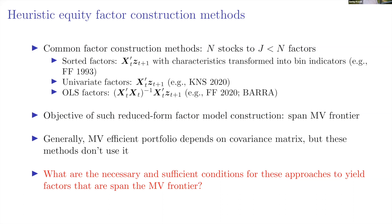The first question is: what are the necessary and sufficient conditions for factor models to still yield mean-variance efficiency? In other words, if I start with a large cross-section of 10,000 stocks and reduce them to, say, 10 portfolios, when do the mean-variance efficient portfolios formed from the stocks versus from the factors give the same result?